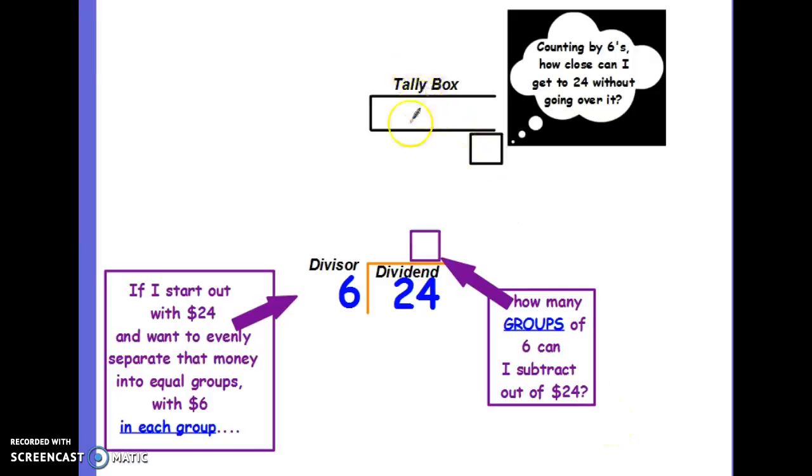A tally box is just going to tell me how many times I skip counted by the divisor. The divisor, by the way, is that smaller number and you can always determine that because divisor is spelled with 1, 2, 3, 4, 5, 6, 7 letters and dividend, which is the larger number, is spelled with 1, 2, 3, 4, 5, 6, 7, 8 letters. So, the larger word is the larger number.